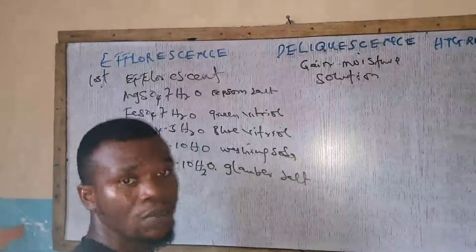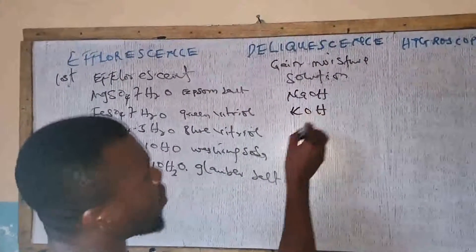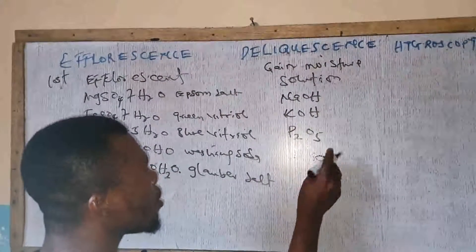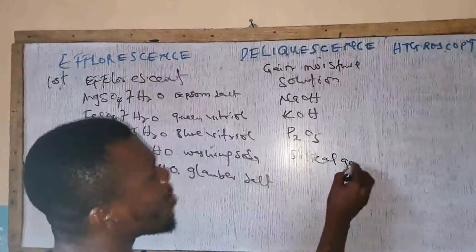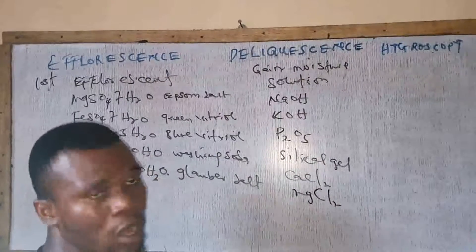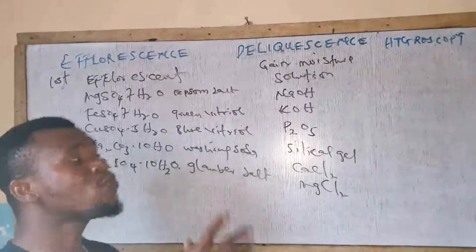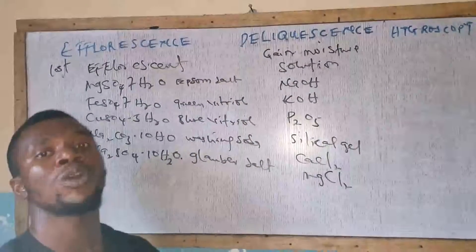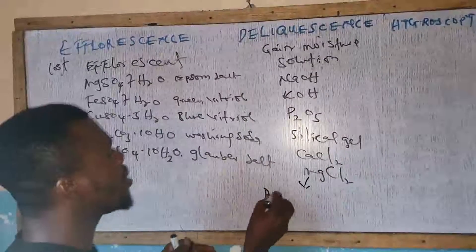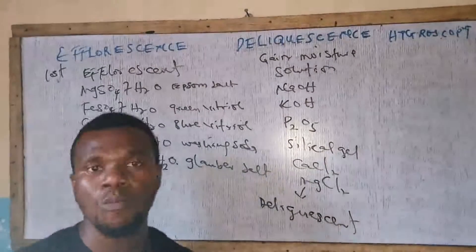Examples of deliquescent substances include sodium hydroxide, potassium hydroxide, phosphorus pentoxide (P₂O₅), silica gel, calcium chloride, and magnesium chloride. All these salts, when exposed to the atmosphere, will absorb moisture and form a solution. They are described as deliquescent salts because they exhibit the phenomenon of deliquescence.